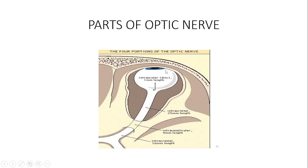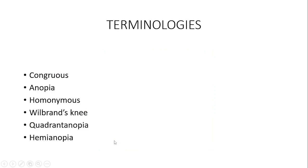This is your orbit, this is the eyeball. Your retina is within here — it has ganglion cells. Once the ganglion cells come together they form the optic nerve. The right and left optic nerves when they come together form what you call the optic chiasma.